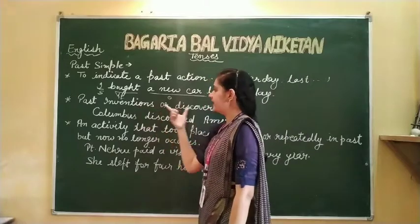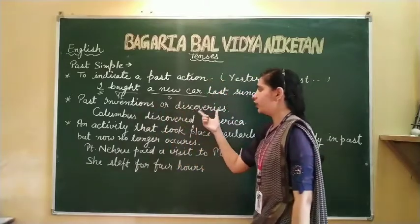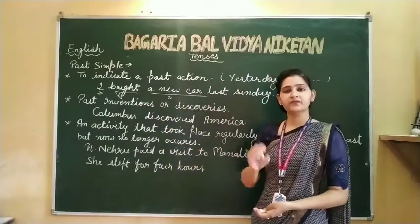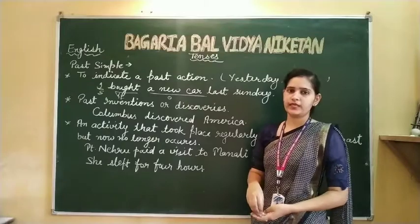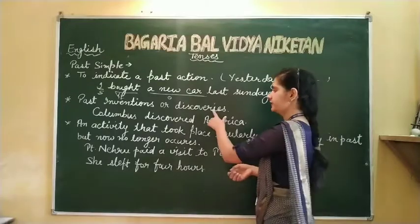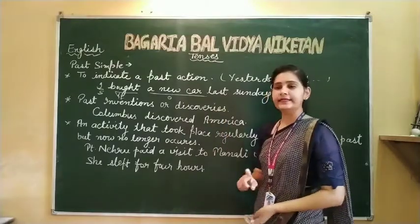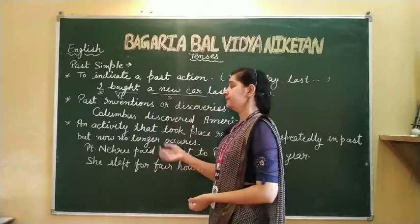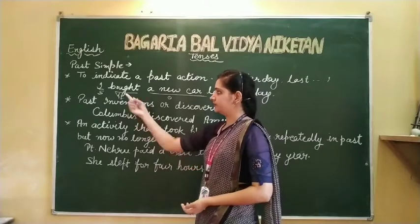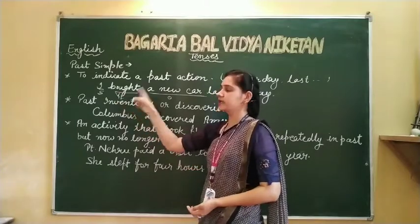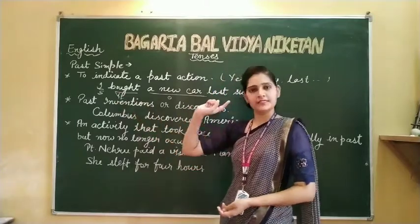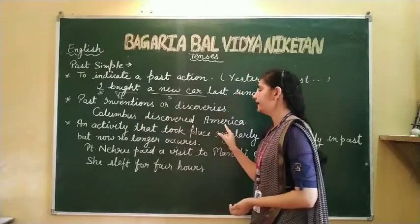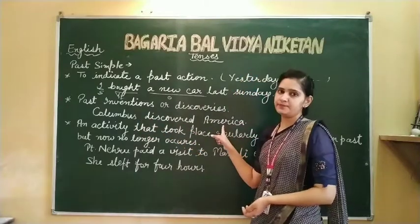Second situation is past inventions and discoveries. If we have to use past, we use past simple. That is: subject plus verb's second form and object. For example, Columbus discovered America.